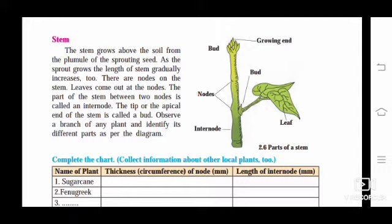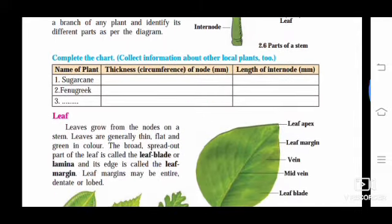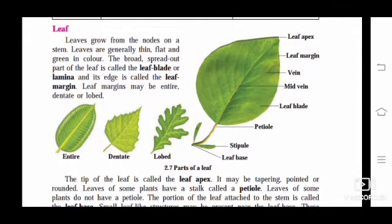The tip or the apical end of the stem is called a bud. The bud is actually the growing end of the stem. Observe the stem of any plant and identify its different parts as per the diagram. You can observe rose plants and see the rose stem.